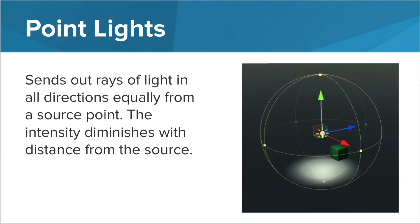Point lights also have an identified source. They send out rays of light in all directions equally from the source point. Point lights are helpful for illuminating areas with lamps or creating sparks and explosions.